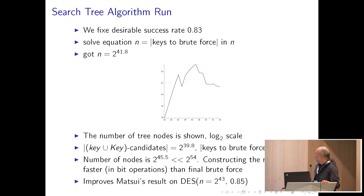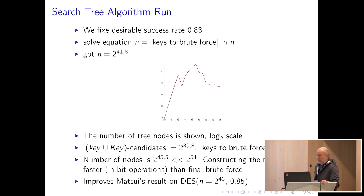The number of nodes in the tree is 2^45.5, which is larger than brute force complexity. However, constructing one node is a very simple operation — just checking two linear inequalities with low-precision real numbers. In bit operations, constructing that many tree nodes is cheaper than brute-forcing that many DES keys. This improves Matsui's result on DES, which according to the previous talk required 2^43 operations at 85% success rate. In contrast to Matsui's result — where the success rate was computed experimentally for 8 rounds and then extrapolated to 16 — our success rate is computed fully theoretically.